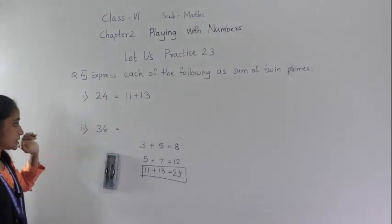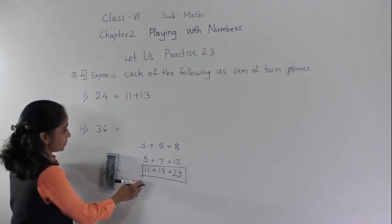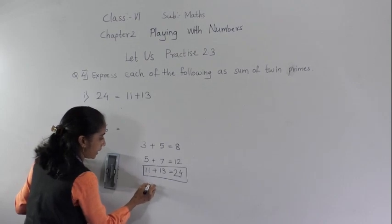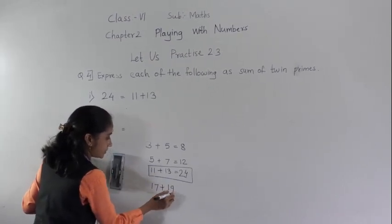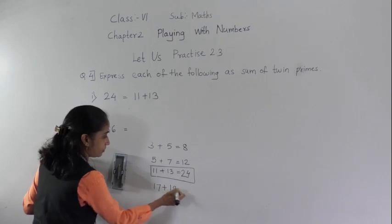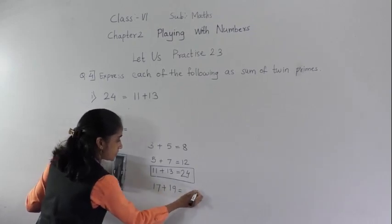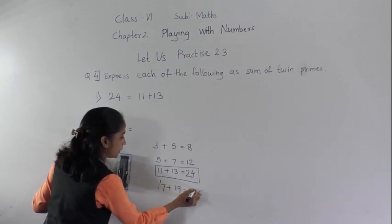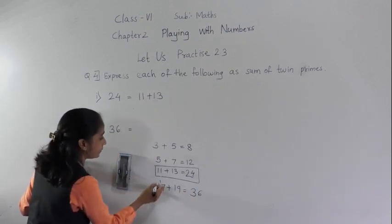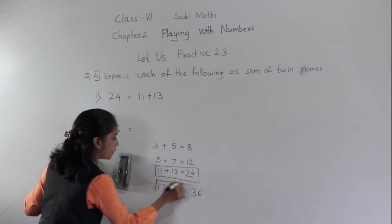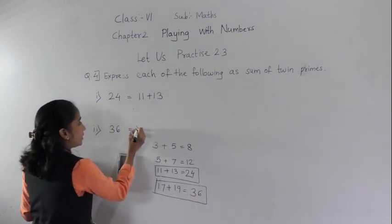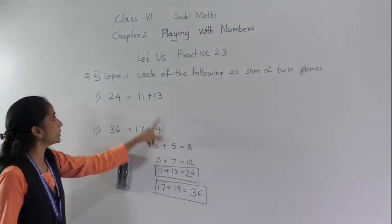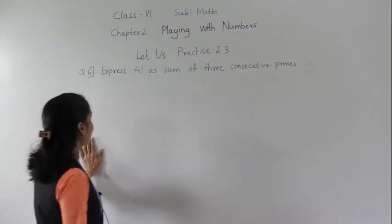Now let's check thirty-six. After eleven and thirteen, the next pair of twin primes is seventeen and nineteen. Seventeen plus nineteen — nine plus seven is sixteen, and one plus one plus one equals three — so we get thirty-six. Therefore, seventeen plus nineteen equals thirty-six.